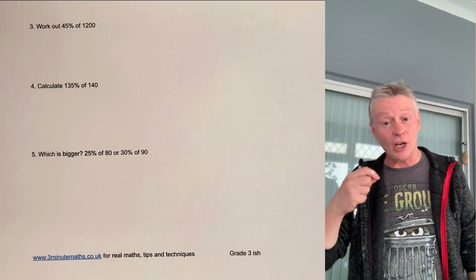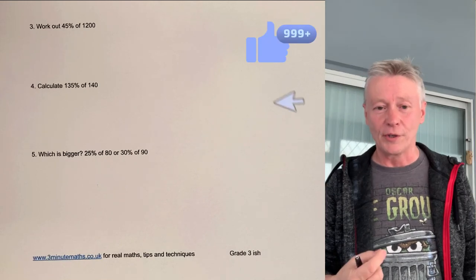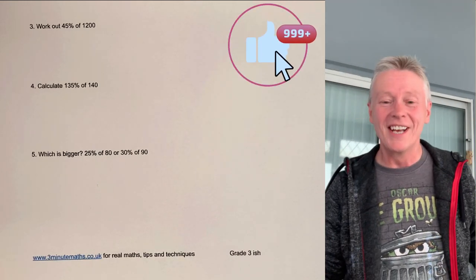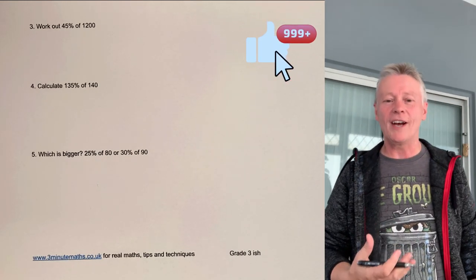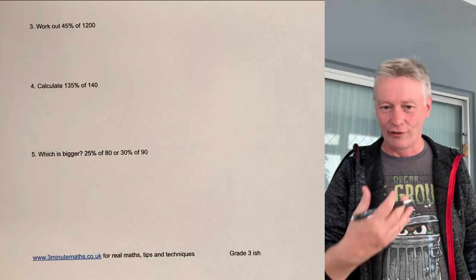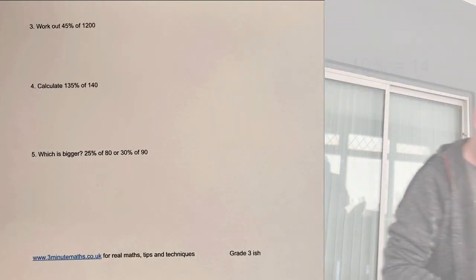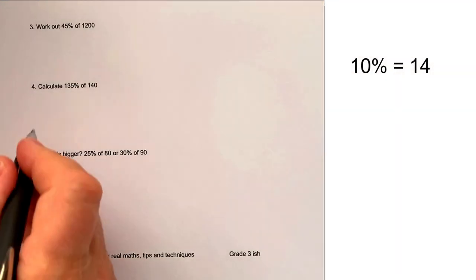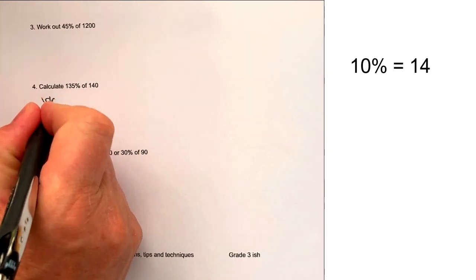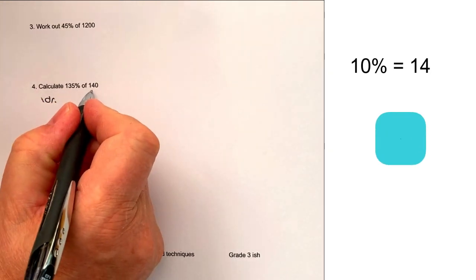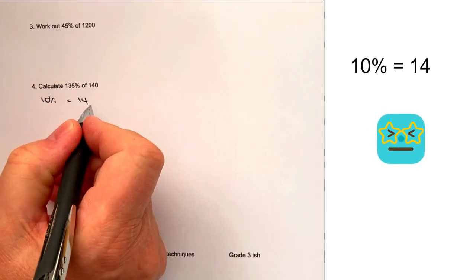We know that 100% of 140 is 140, so what we've got to do is work out that additional 35%. The way we're going to do that is to say that 10% of 140 is going to be equal to 14.